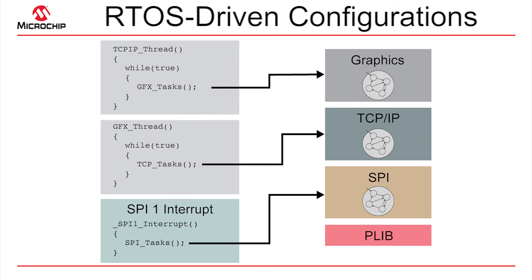It's entirely up to you — you define the configuration. The MHC just provides a few pre-made configurations. In an RTOS environment, each of these libraries, if running in its own loop and its own thread, can be prioritized using the capabilities of the RTOS itself. Using MPLAB Harmony in an RTOS configuration, you have complete determination of priorities from the lowest level interrupts up to the highest level abstract threads, allowing you to prioritize and control the interaction of your entire system.